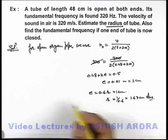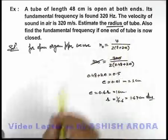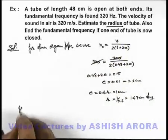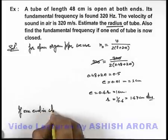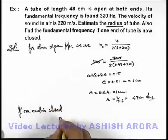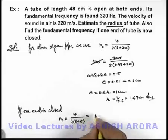We have got the radius of the tube. We can easily find the fundamental frequency if one end of the tube is closed. We can write, if one end is closed, the fundamental frequency we can write as v by 4l plus e. So here it can be given as 320 divided by 4 times 0.48 plus 0.01.